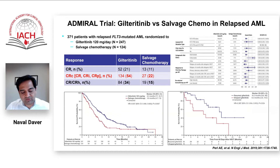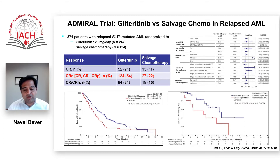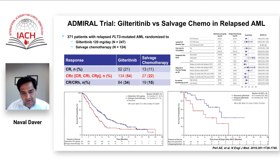Starting with gilteritinib, which is the first FLT3 inhibitor approved in the relapsed/refractory setting — this is a very powerful, effective FLT3 inhibitor. This is the phase 3 ADMIRAL randomized study published by Dr. Sasha Perl in the New England Journal of Medicine. In relapsed/refractory FLT3-mutated AML, single-agent gilteritinib oral targeted therapy versus salvage high-dose intensive chemotherapy gave us doubling of both the CR and CRc rates, with more than 50% remission. This study established that no patient in relapsed/refractory FLT3-mutated AML should go without an FLT3 inhibitor.